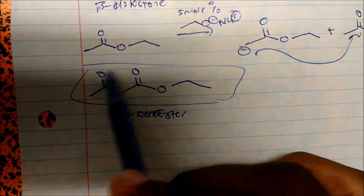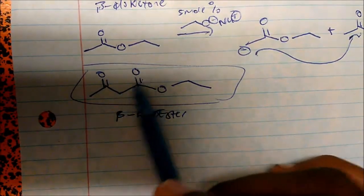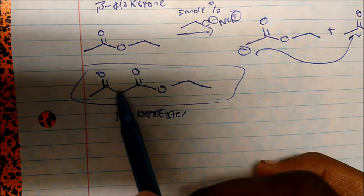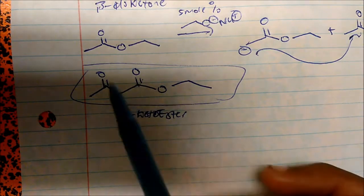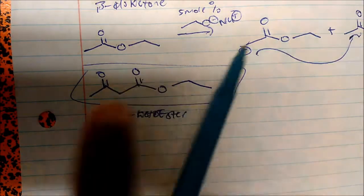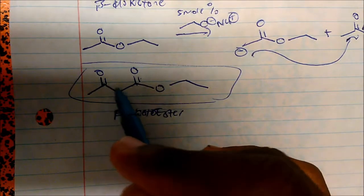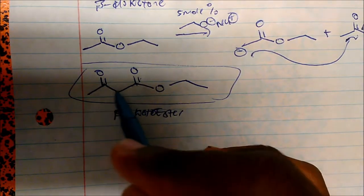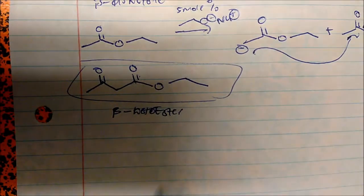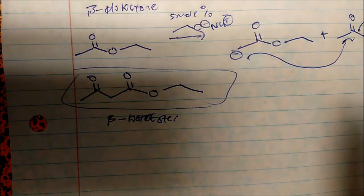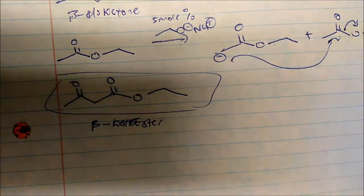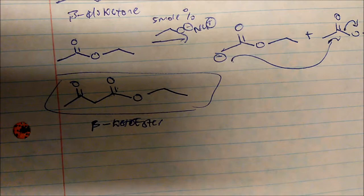So anytime you see these carbonyls one carbon away from each other — or two carbons away from each other, one-two — we know this is a Claisen condensation. And that's the simple idea.